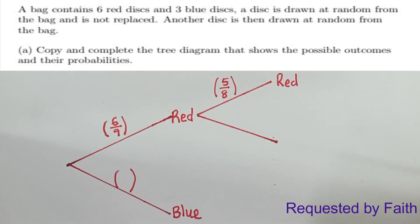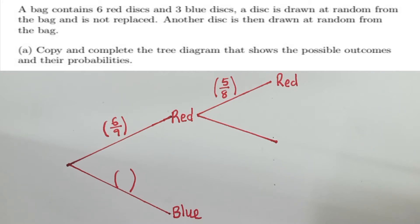Let's read the question. A bag contains six red disks and three blue disks. A disk is drawn at random from the bag and is not replaced. Another disk is then drawn at random from the bag. Copy and complete the tree diagram that shows the possible outcomes and their probabilities.